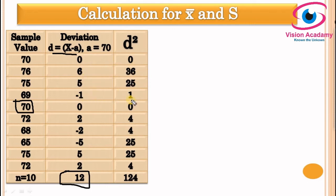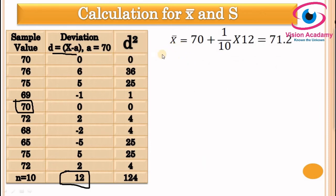The sum of squared deviations Σd² = 124. Now calculating x̄: x̄ = A + (1/n) × Σd = 70 + (1/10) × 12 = 70 + 1.2 = 71.2. So the sample mean x̄ = 71.2.